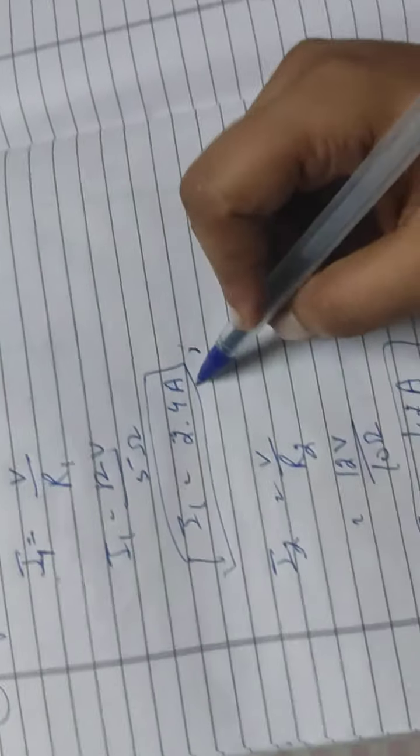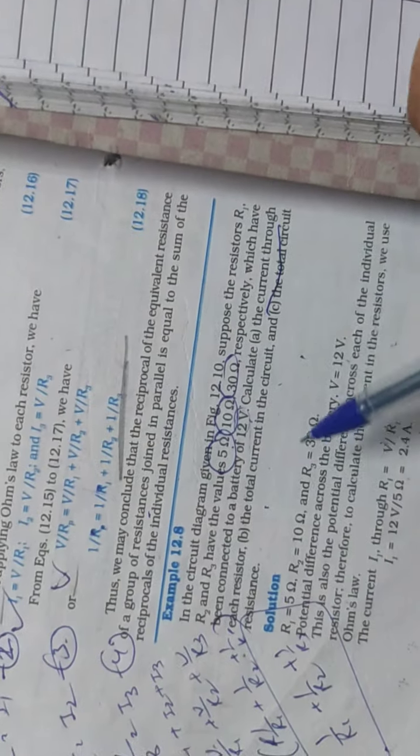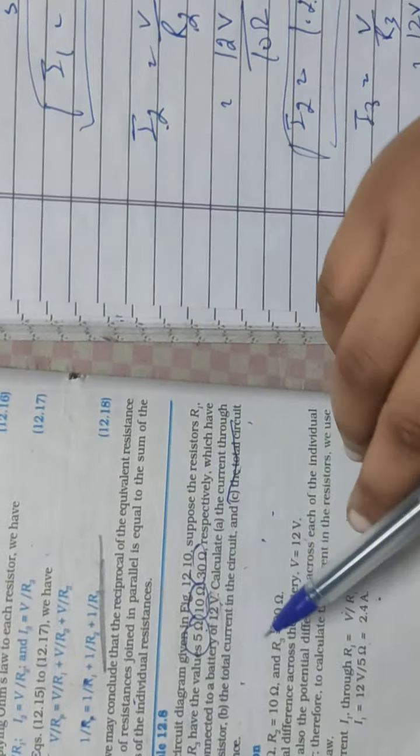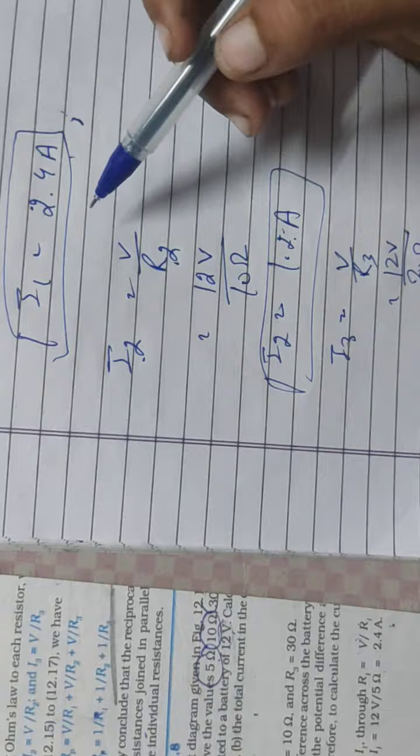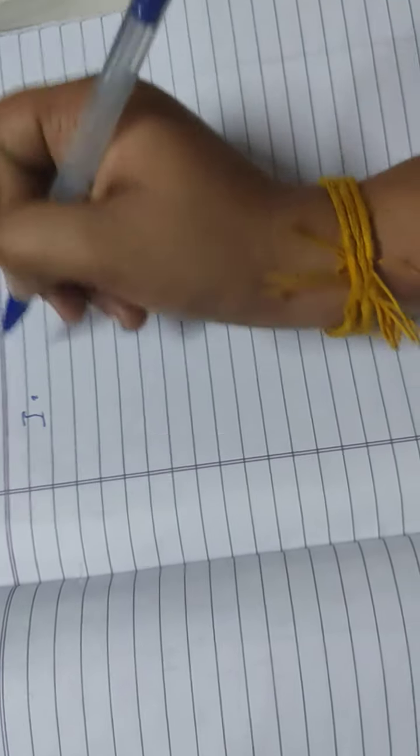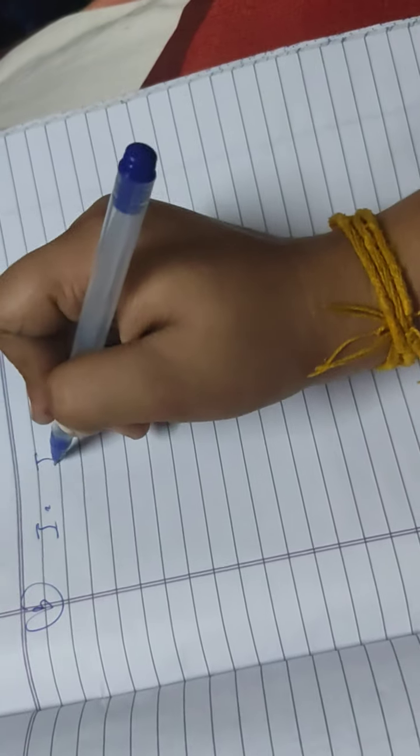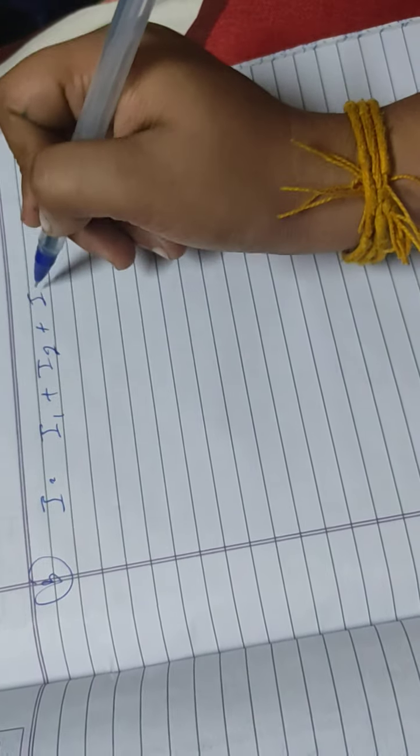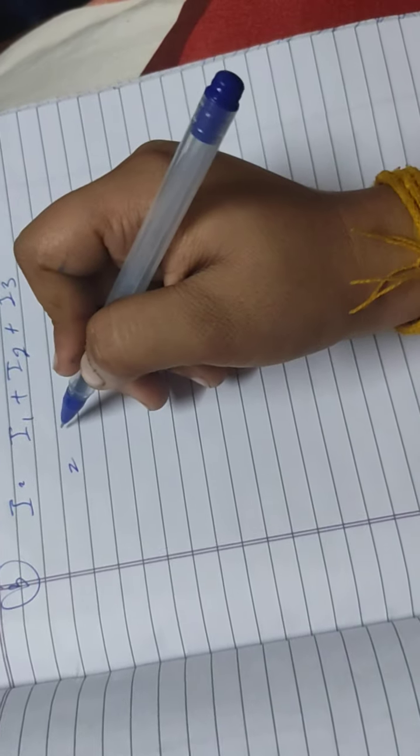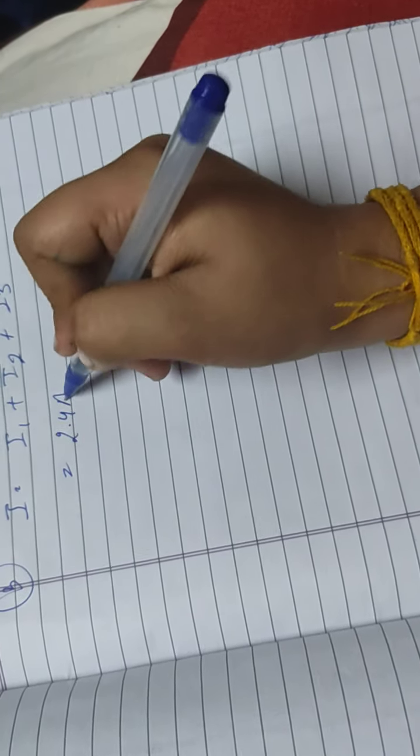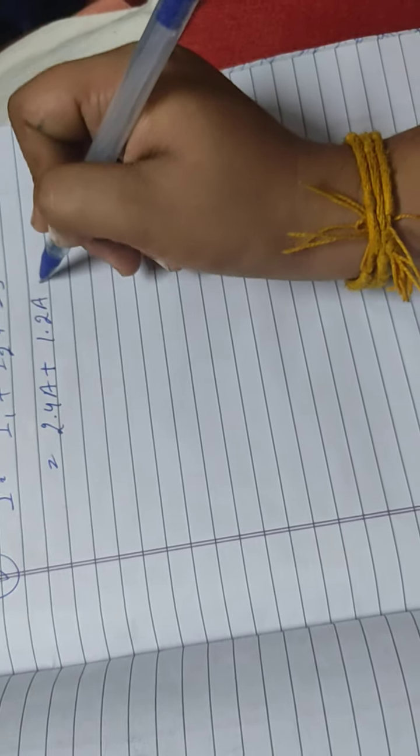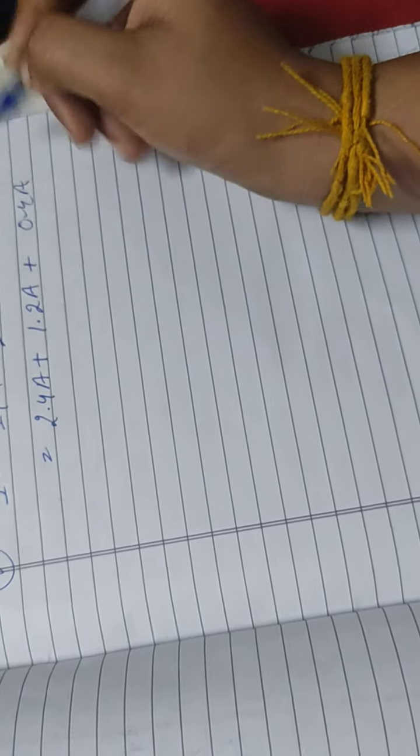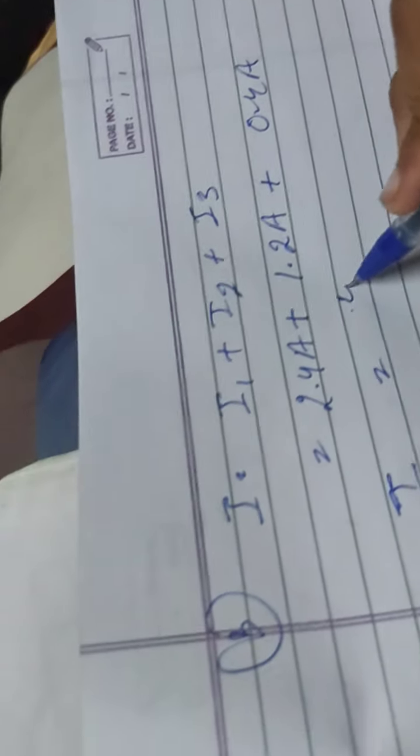So we calculated I1, I2, I3. Part A was to find current for each resistor, R1, R2, R3. Now part B is total current. Total current will be the sum of separate currents. I1 is 2.4 ampere, then 1.2 ampere plus 0.4 ampere. Add all these, the total current answer is 4 ampere.